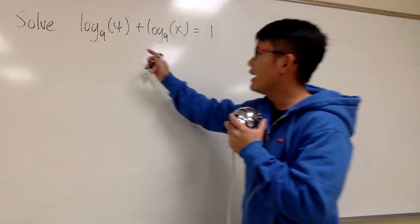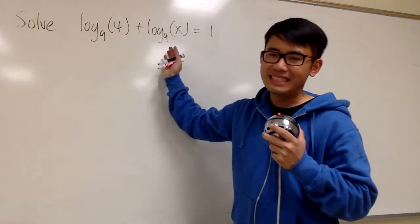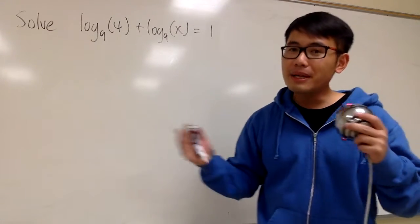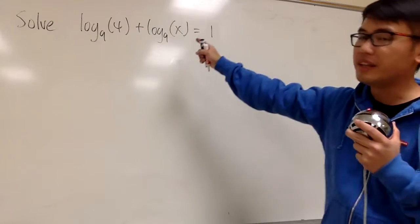Okay, here we're going to solve this equation, and you see that we have two logs on the left-hand side. This is not good, because we don't want to have two logs. But it's okay, because once again, this is going to be an easy fix.